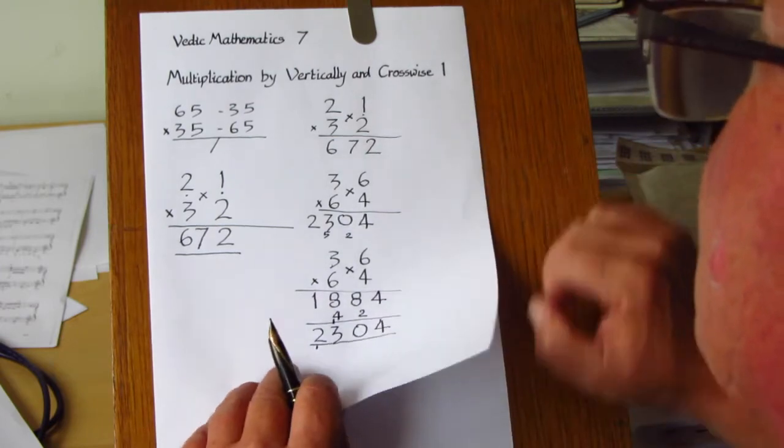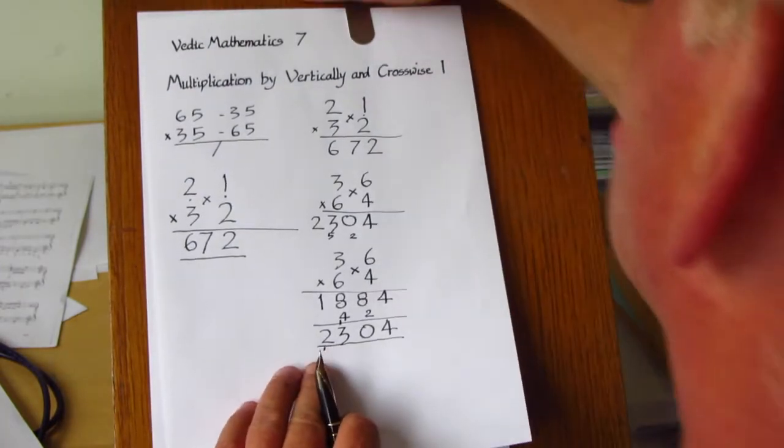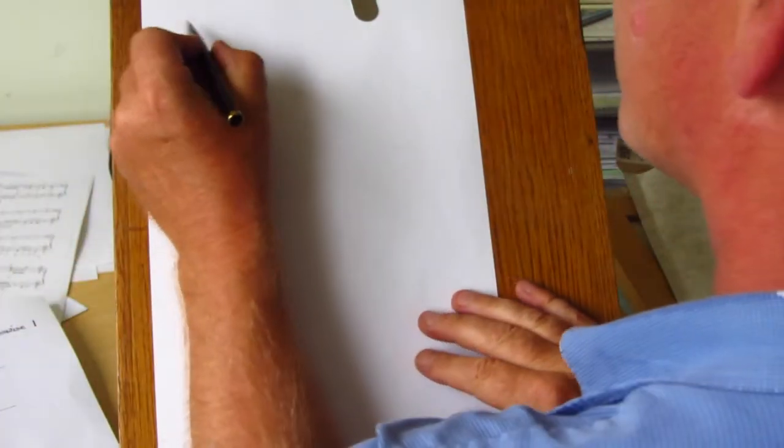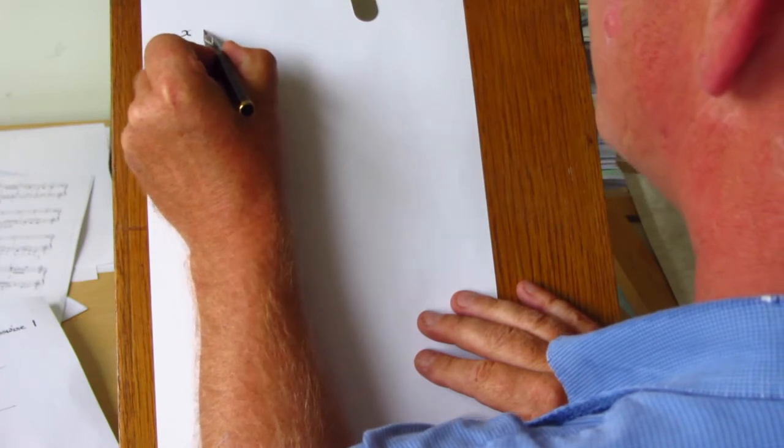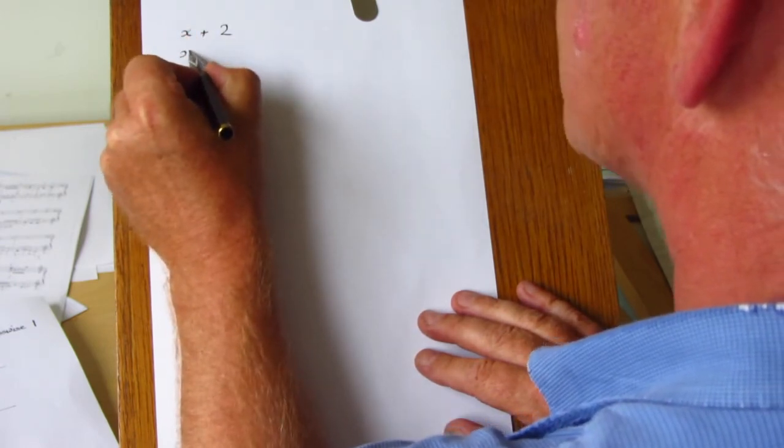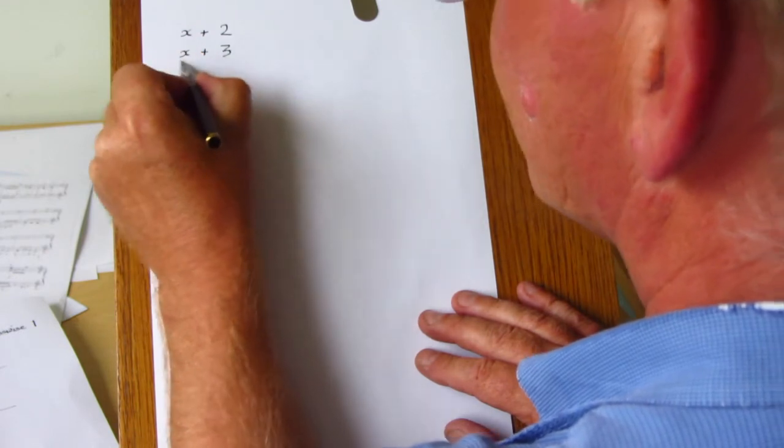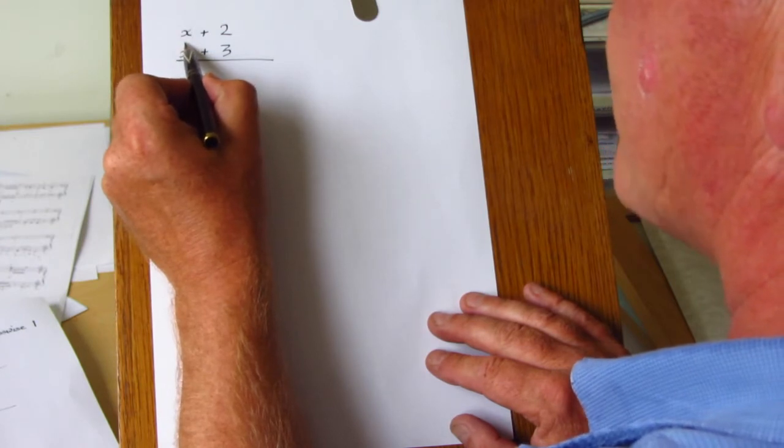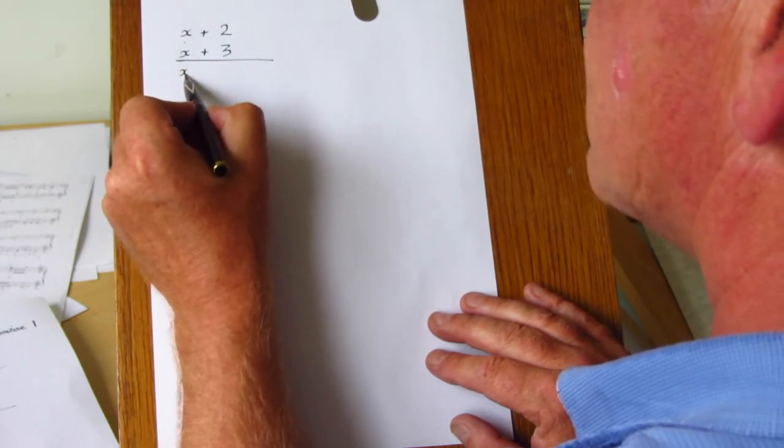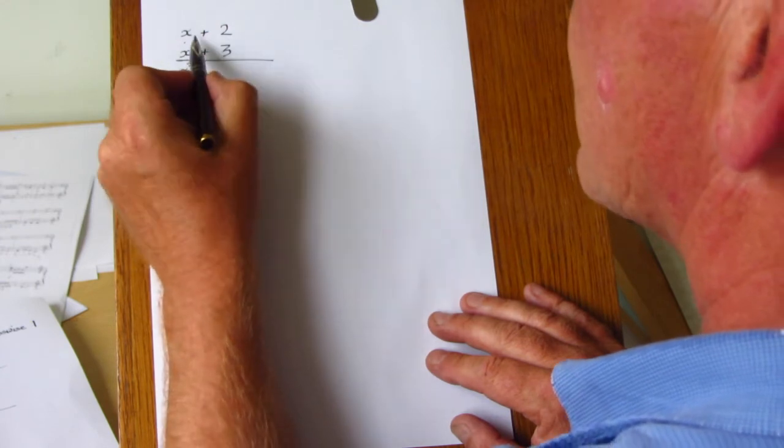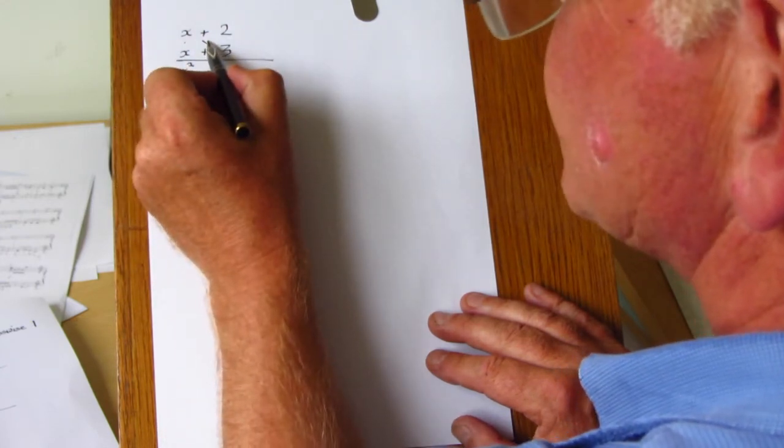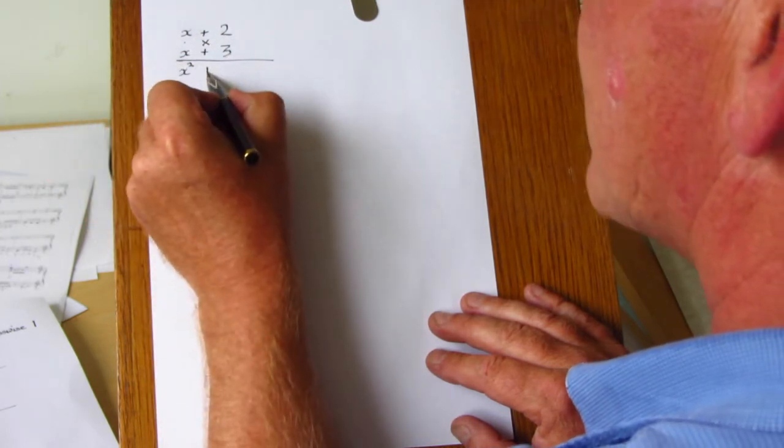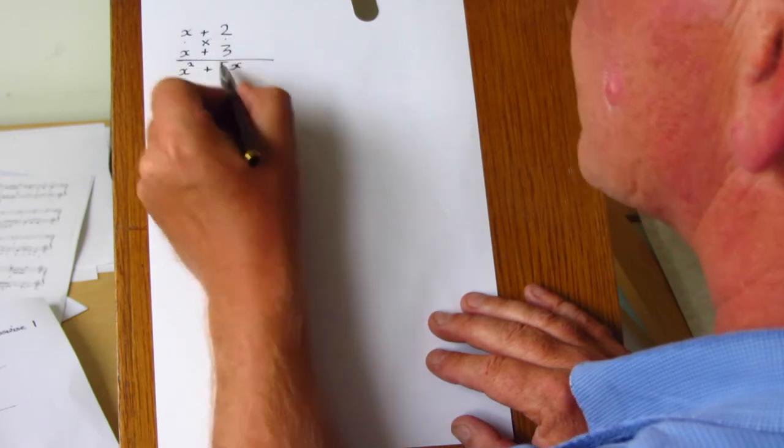But the reason why this is being shown at present is because it's useful for multiplying algebraic products together. So if we have, for example, x plus 2 multiplied by x plus 3. It's quite easy working from the left. Starting with this step vertically, x times x is x squared. Then crosswise, 3x. And crosswise this way, 2 times x is 2x. And 3x add 2x gives 5x. And then finally, 2 times 3 is 6.